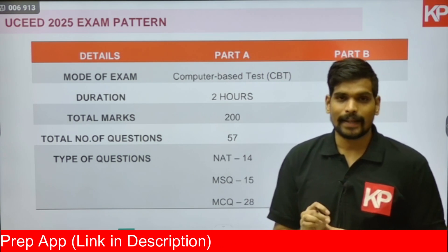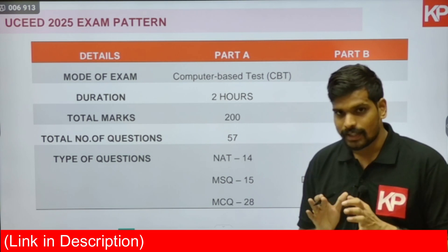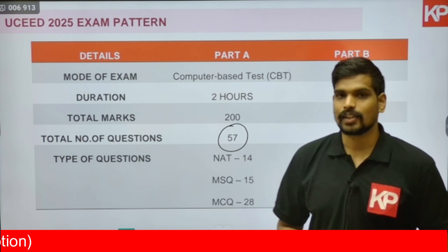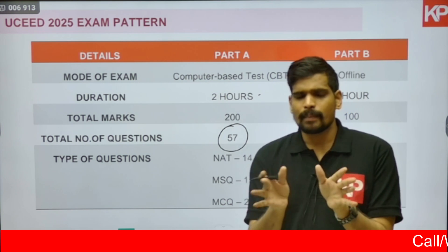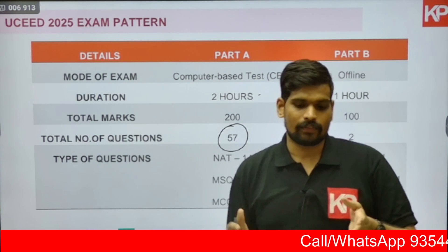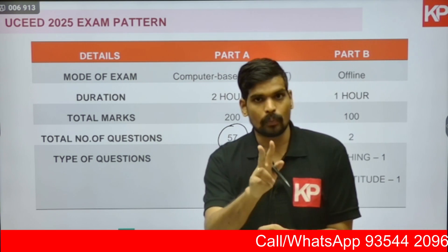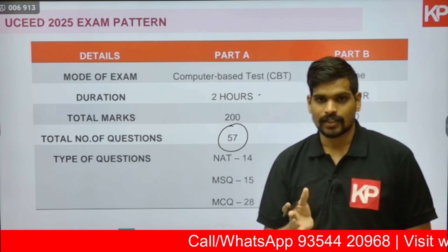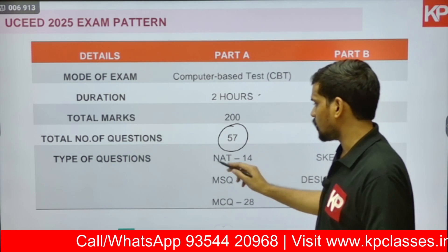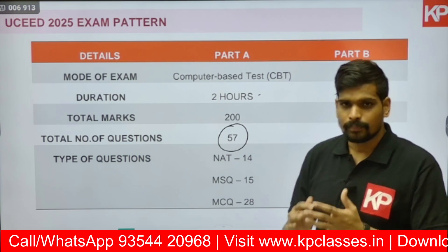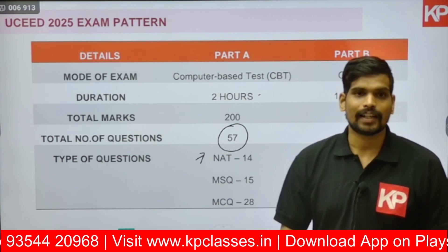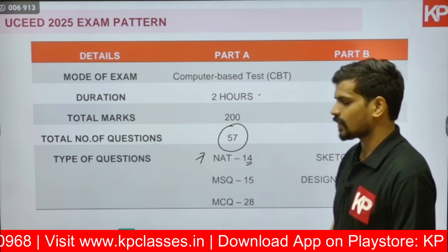As far as Part A is concerned — the computer-based test, two hours, 200 marks — there are a total of 57 questions to answer within 120 minutes. That gives you approximately two minutes per question, so it is not an exam where you have a lot of time. You must answer every question within two minutes. There are three types of questions in Part A, and there is also negative marking in the marking scheme.